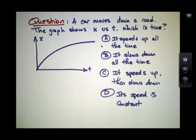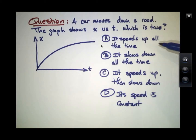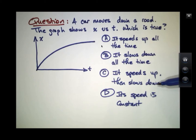We're going to look at a question to develop our intuition around speed and acceleration. This question looks at a car that's moving down a road, and the graph shown here plots its position as a function of time. I've given four choices: Is the car speeding up all the time? Is it slowing down all the time? Does it speed up and then slow down? Or is its speed constant?